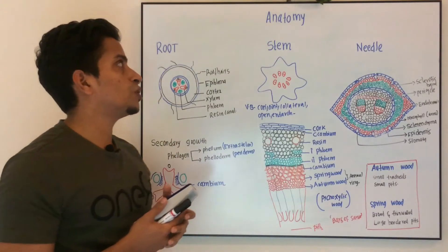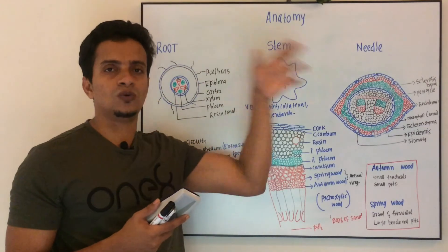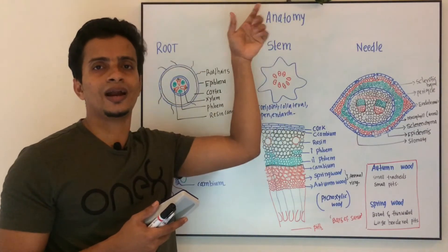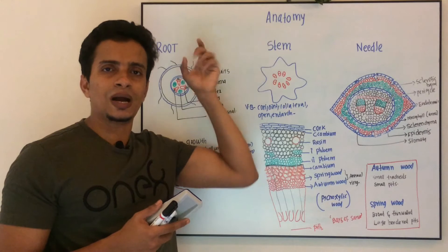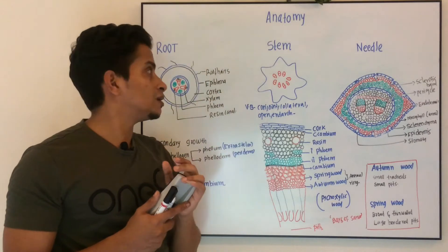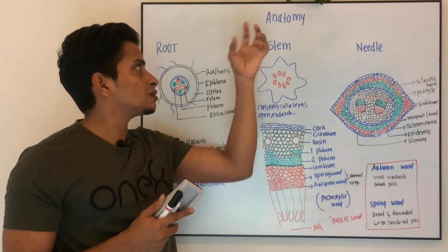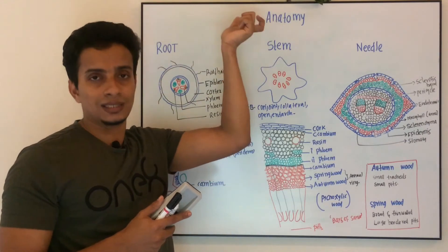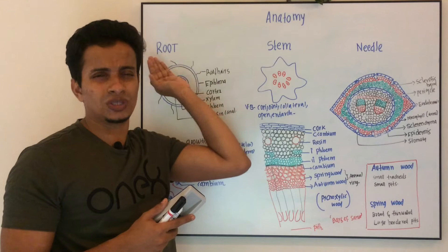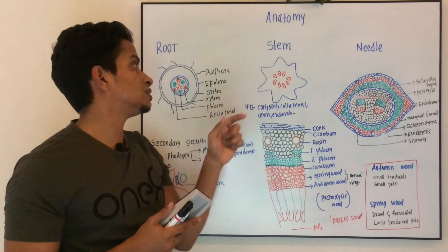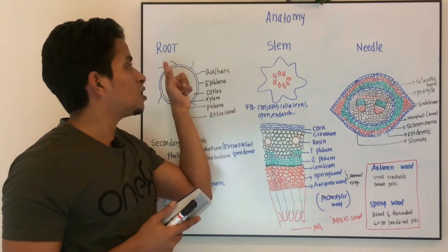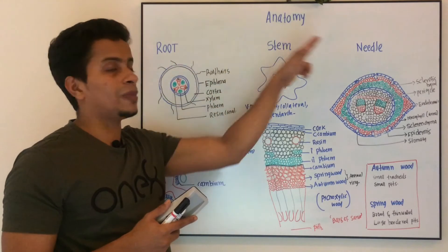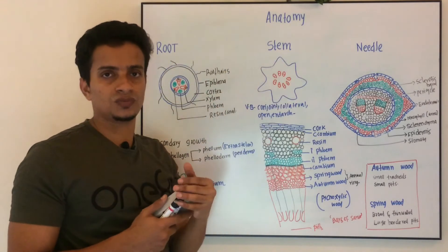Today we are going to discuss the internal anatomy of Pinus. Let us categorize this anatomy into three major portions: root, stem, and needle.